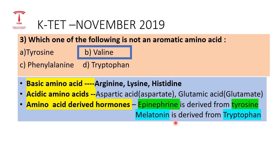A related exam question from November 2019 asks: which hormone is derived from an amino acid? Options include epinephrine, cortisol, progesterone, and insulin. The answer is epinephrine — epinephrine is an amino acid-derived hormone.